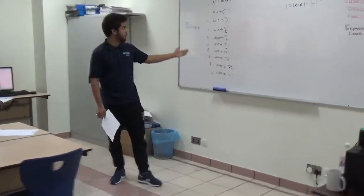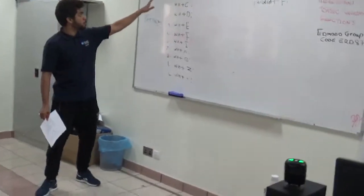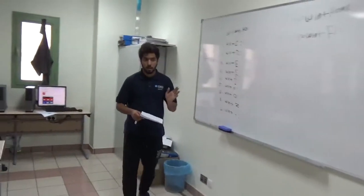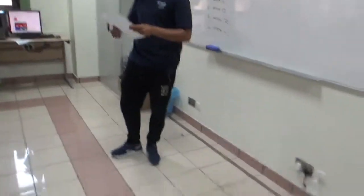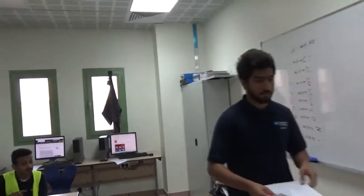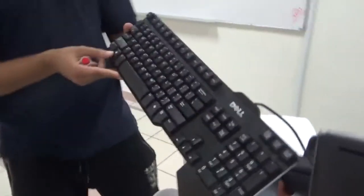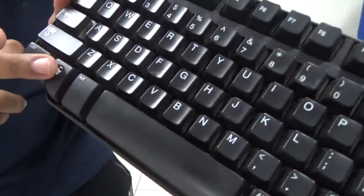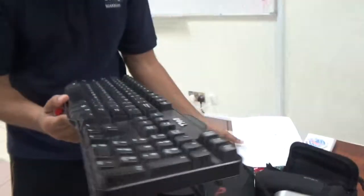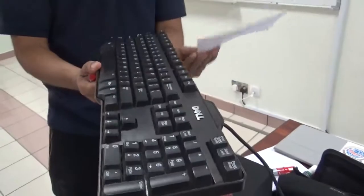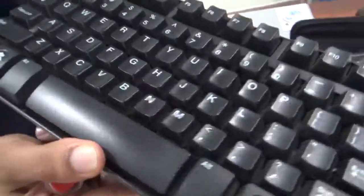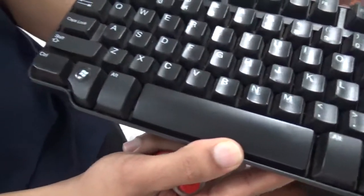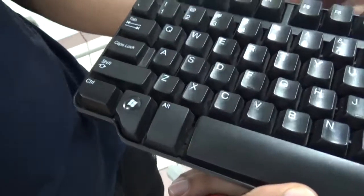First key: Windows key. Just use the keyboard here. This is the Windows key. When you press this key, it toggles between the Start, Search, and last open program.